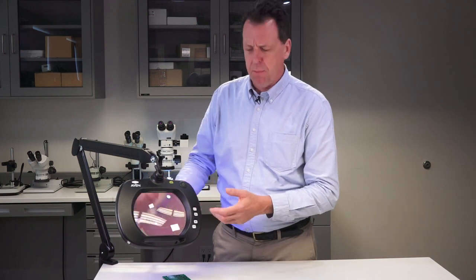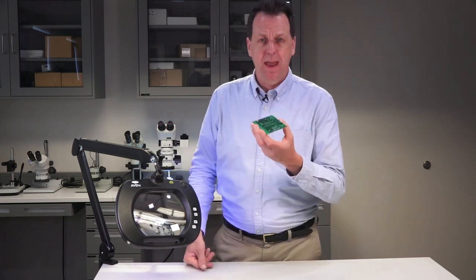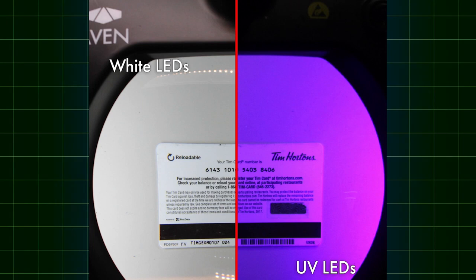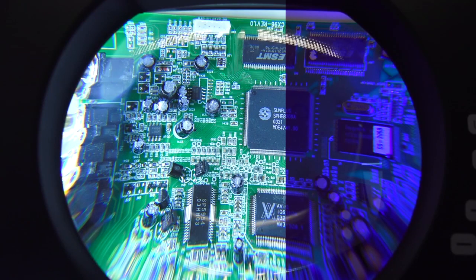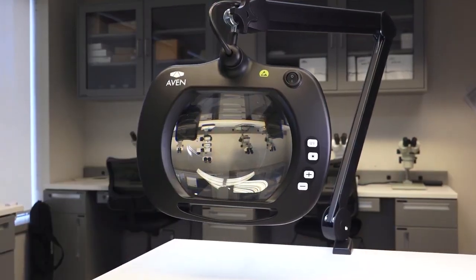And if you're using the UV light you may be able to inspect the coatings, conformal coatings on circuit boards that fluoresce in ultraviolet light and that's a very popular application for this particular MightyView Pro with ultraviolet light. So there's a 3 and a 5 diopter version of that as well. Both are ESD safe.